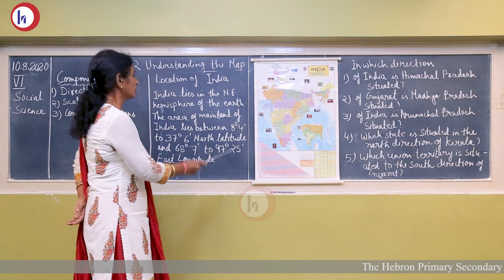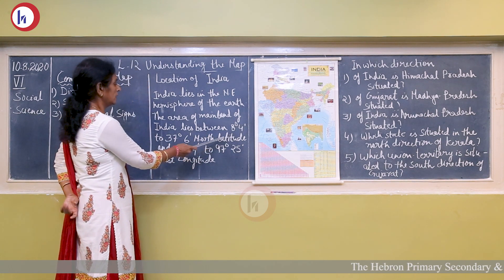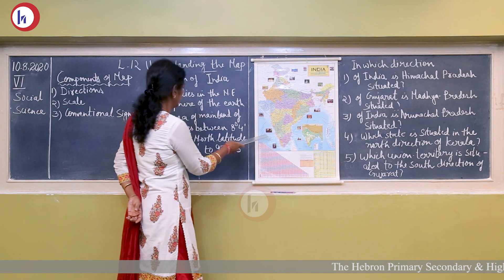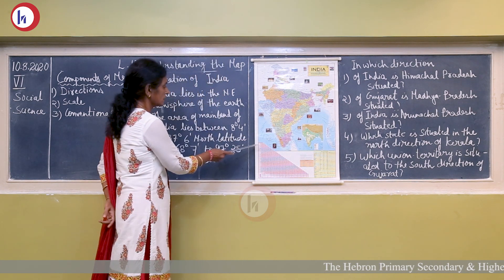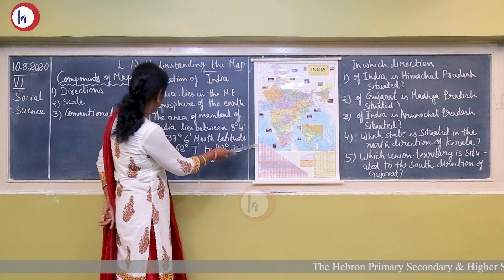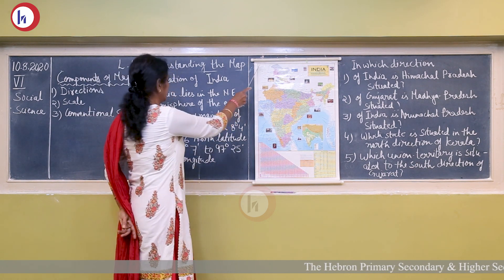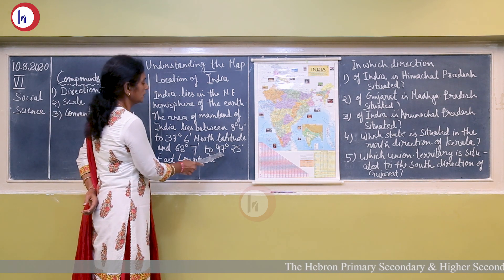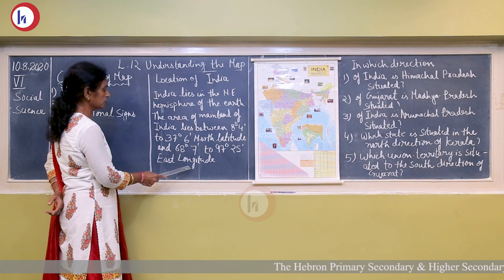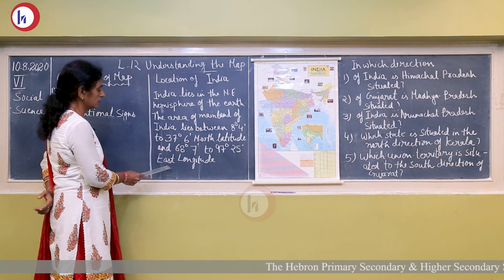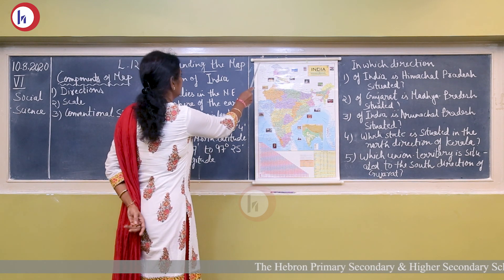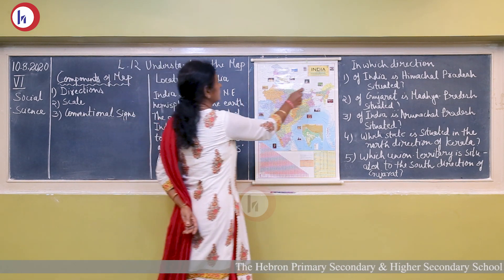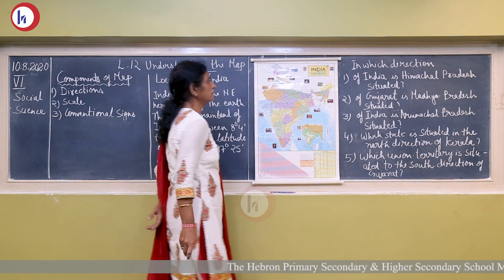Since north is given, it is understood the starting point is from the south direction. India lies 8 degrees 4 minutes to 37 degrees 6 minutes north latitude and 68 degrees 7 minutes to 97 degrees 25 minutes east longitude. Since east is given, it is understood the starting point is from the west direction — 68 degrees 7 minutes to 97 degrees 25 minutes east longitude.